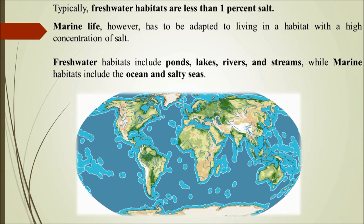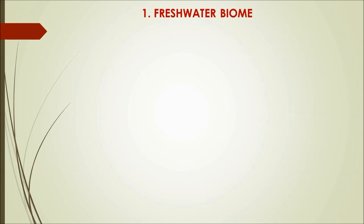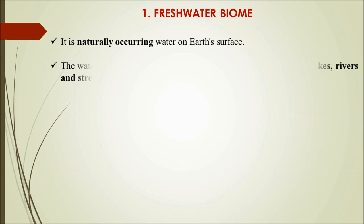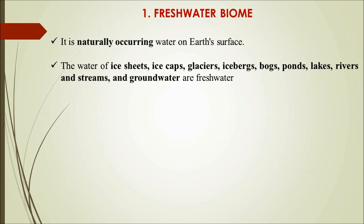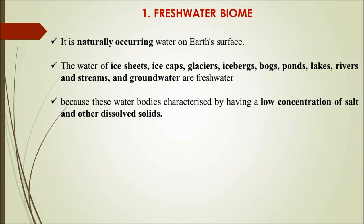The freshwater biome is naturally occurring water on Earth's land surface. Its sources include ice sheets, ice caps, glaciers, icebergs, bogs, ponds, lakes, rivers, streams, and groundwater. Freshwater has a low concentration of salt and other dissolved solid particles, which is why it is fresh in nature.